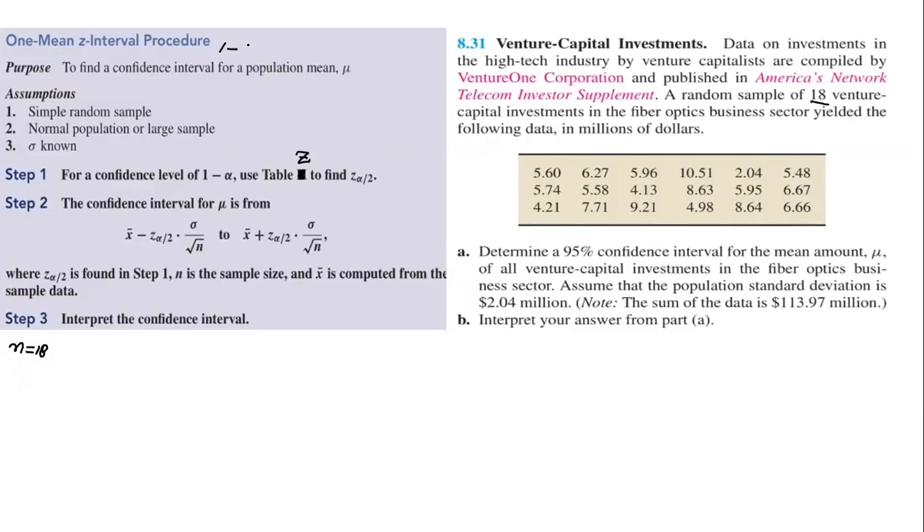We compute 100 times 1 minus alpha percent confidence interval. So 95% can be written as 100 times 1 minus alpha percent equals 95%. This can be written as 1 minus alpha equals 0.95, which gives alpha equals 0.05. And then we need alpha by 2, so alpha by 2 is 0.025.